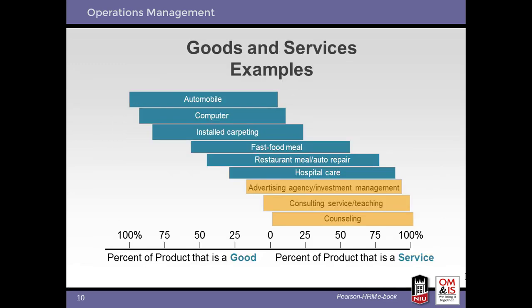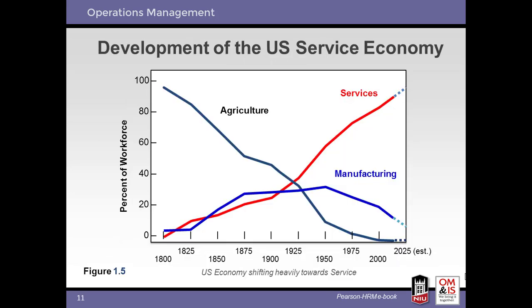This graph supports the earlier statement that there are few pure goods or services, with various goods and services falling along that spectrum. Here we can see the evolution of three sectors of the U.S. economy. Note the growth in services versus the decline in agriculture and manufacturing.